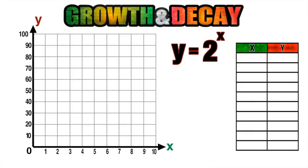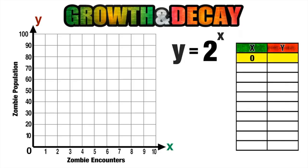So now let's go ahead and graph this exponential function. We are going to label our x axis as the number of zombie encounters and our y axis as the zombie population. So now let's go ahead and work on filling out our table.